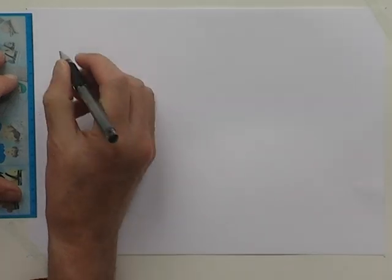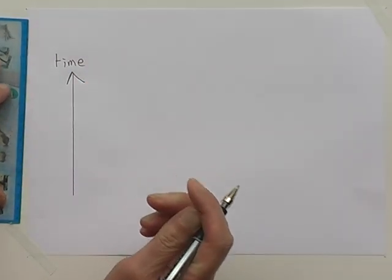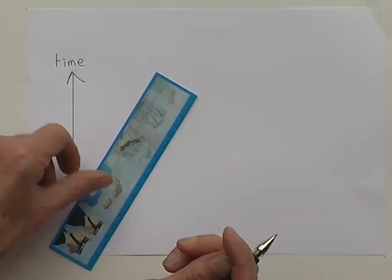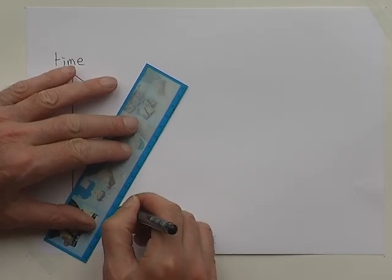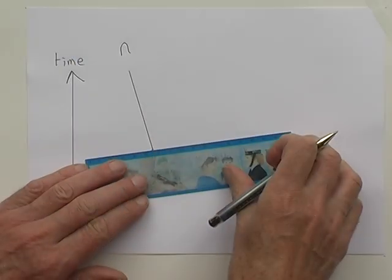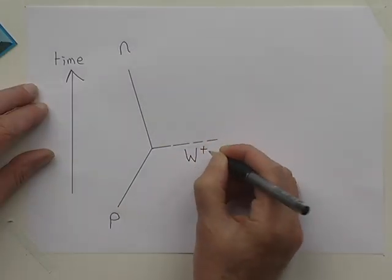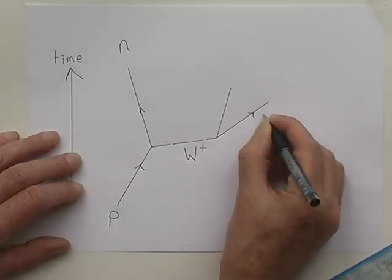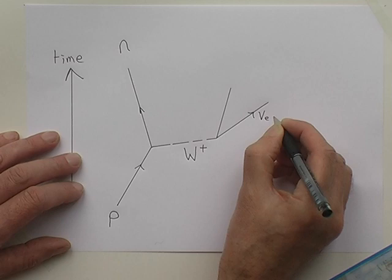My next example is of a positron emitted from a proton to form a neutron. Since a neutron is fundamentally less stable than a proton, energy is required to make this reaction happen. This energy comes from the binding energy of the remainder of the nucleons in the nucleus. The transformation of proton to neutron is accompanied by the emission of a W plus boson. This in turn produces two particles: the positron and a neutrino.